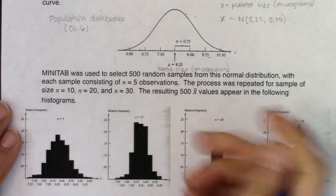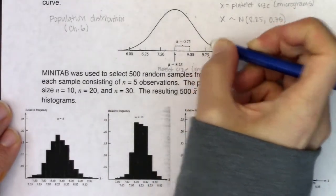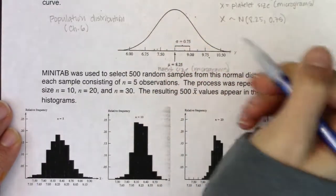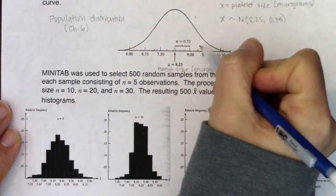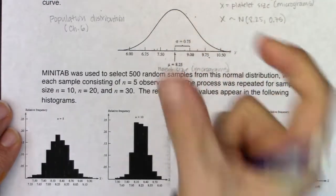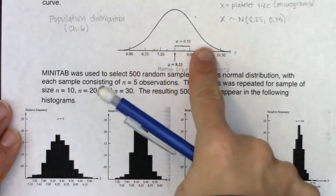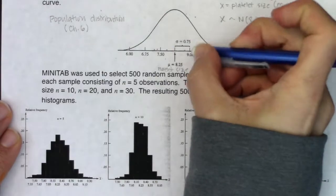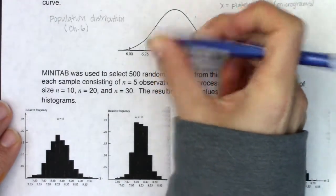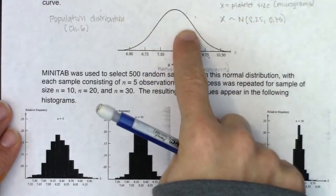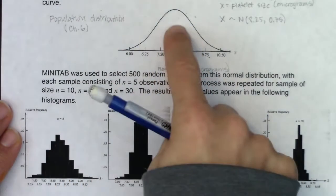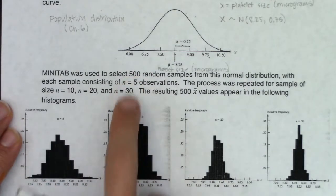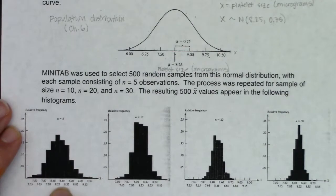Then I erased those five marks and got a different random sample of five. Of those five patients, I got their X-bar — added the five numbers up, divided by five — and put another dot on the graph. I repeated that process 500 times, taking random samples of five and plotting each X-bar, and I made this new sampling distribution.